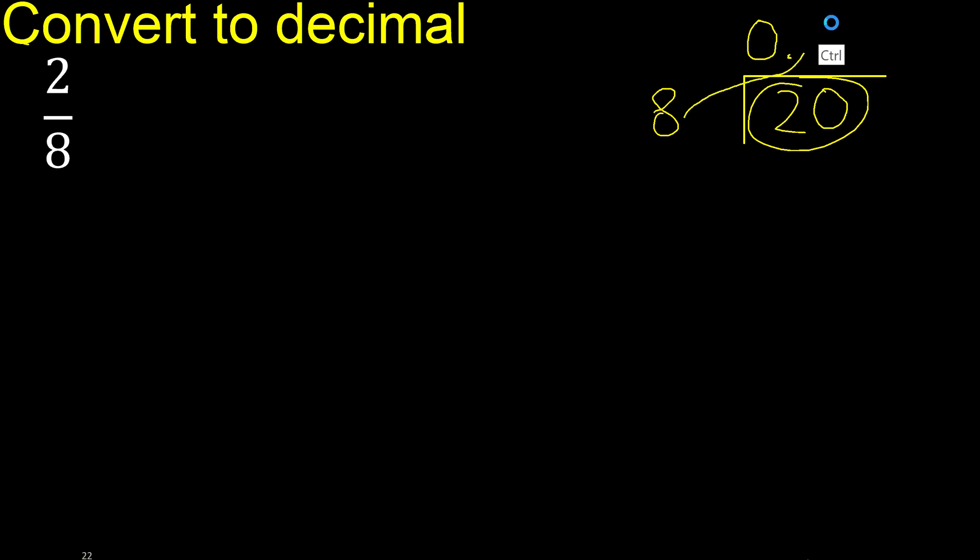8 multiplied by 3 is 24, excessive. 8 multiplied by 2 is 16.